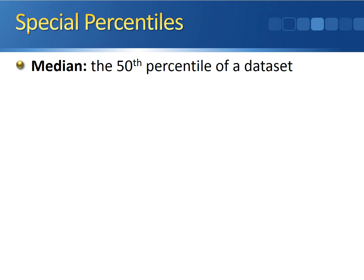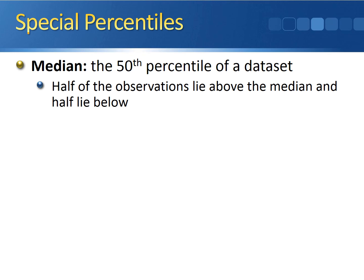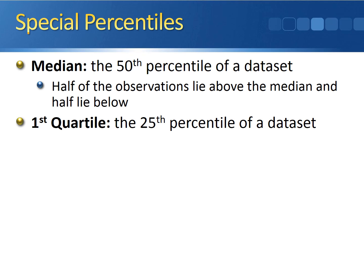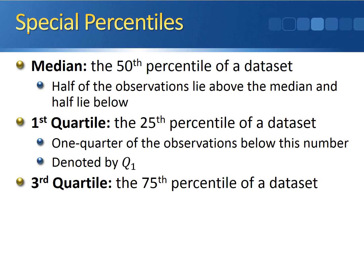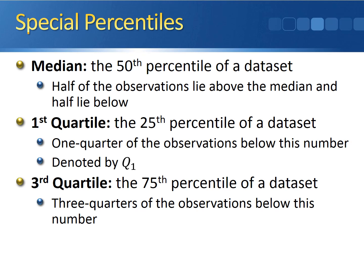There are three types of special percentiles commonly referred to in statistics. The first is the median, which is the 50th percentile — half of the observations lie above it and half lie below. The next is the first quartile, denoted Q1, which is the 25th percentile — a quarter of the observations lie below and three quarters lie above. The final special percentile is the third quartile, denoted Q3, which is the 75th percentile — three quarters of the observations lie below and one quarter lies above.